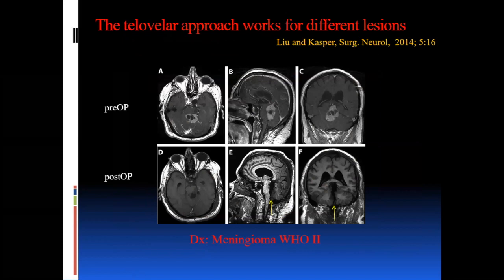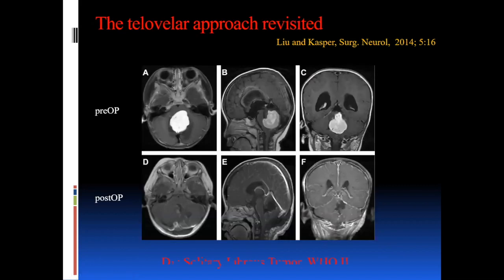Here are a few examples. This was an ependymoma WHO grade 2 — the tumor was relatively high riding in the fourth ventricle, so we needed a very steep angle. With substantial head flexion and a bilateral wide approach, you can elevate the cerebellum nicely and go through a natural cleft without sacrificing any vessels. The patient had a perfect outcome. This is a young child with a larger solitary fibrous tumor again reaching almost the aqueduct, approached the same way.